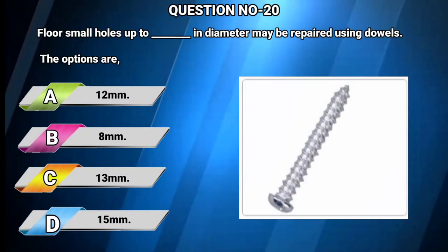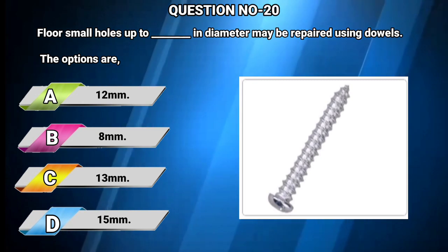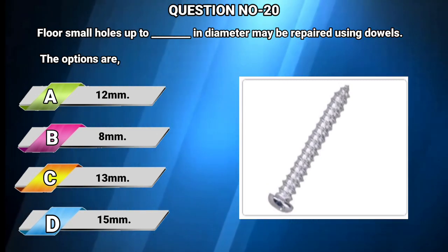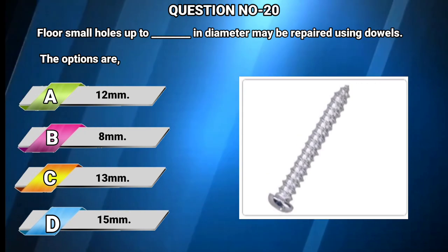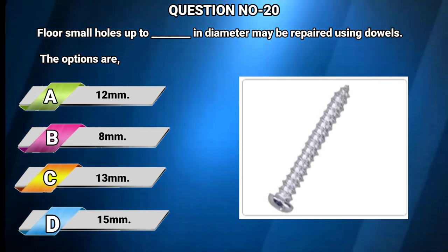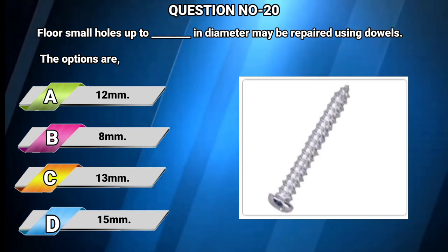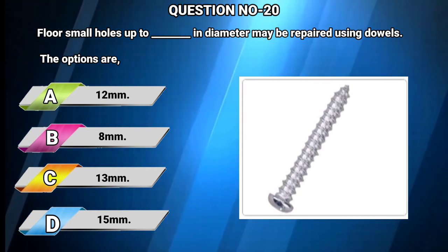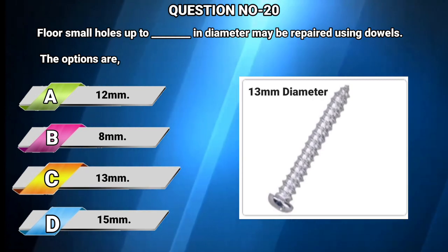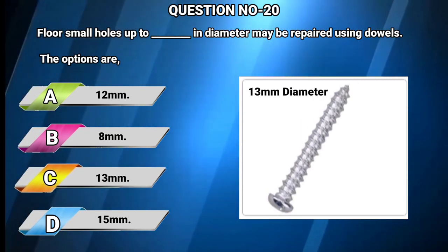Question number 20: Floor small holes up to — in diameter may be repaired using dowels. Options: A) 12 mm, B) 8 mm, C) 13 mm, D) 15 mm. The answer is C: 13 millimeters diameter.